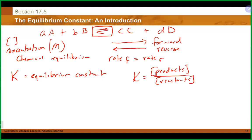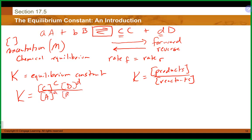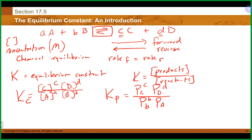When we calculate K using concentrations, we take our products — in this example C to the c — and an important part is we also take the coefficients as exponents: C to the c, D to the d, divided by A to the a and B to the b. When done with concentrations, it's referred to as the KC value. If you have gases, you could write a KP expression using partial pressures — partial pressure of C to the c, D to the d, divided by partial pressure of A to the a and B to the b.